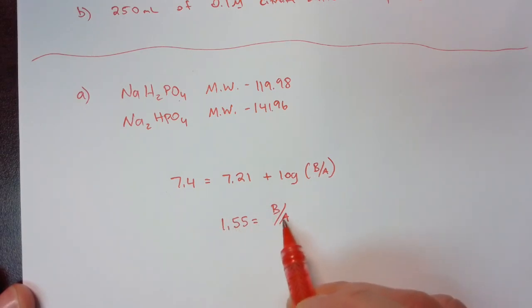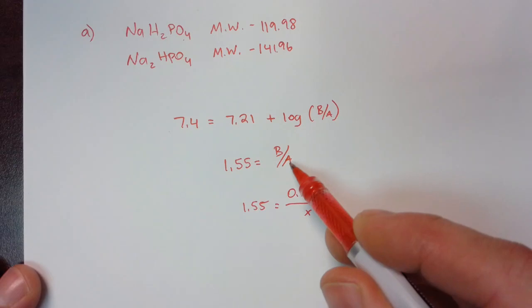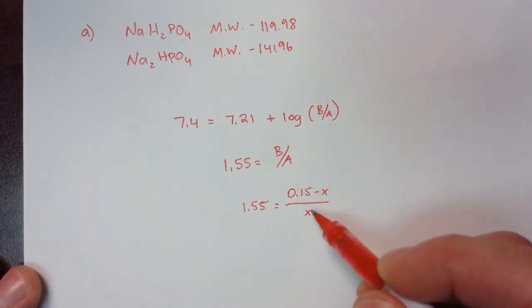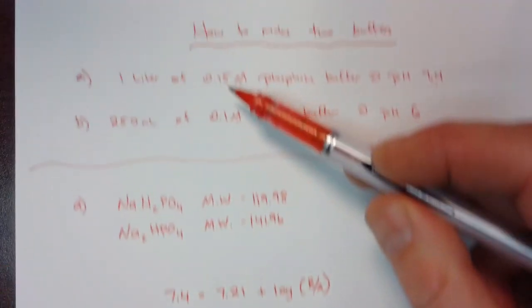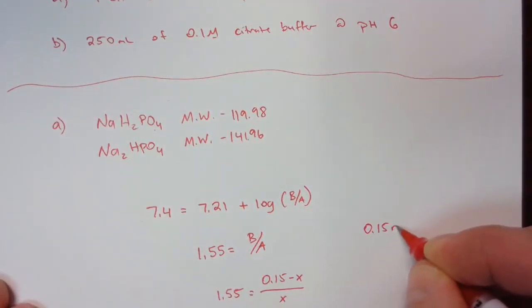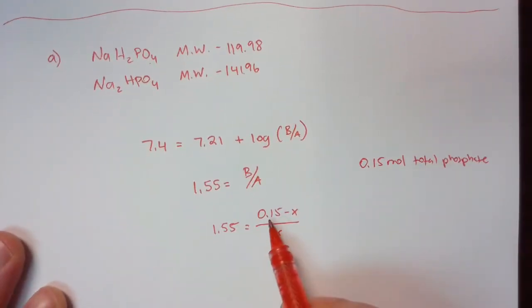So 1.55 equals B over A. Now we need to know what to put in here. And to do that we need to set up an algebraic expression where we're going to solve for x, x being in this case the concentration or the moles rather of acid. And since we have one liter of a 0.15 molar solution that means we have 0.15 moles total phosphate available to us. So that's why I put 0.15 here.